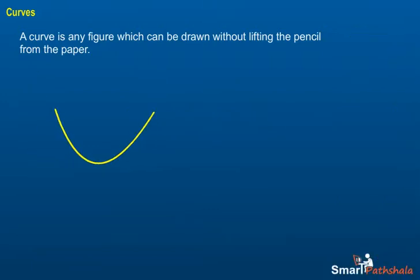Even a straight line is considered to be a curve. If a curve does not cross itself, then it is called a simple curve.